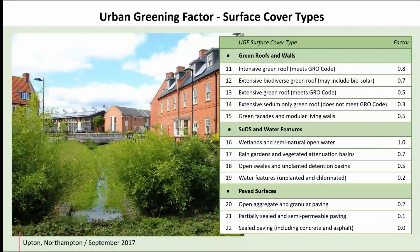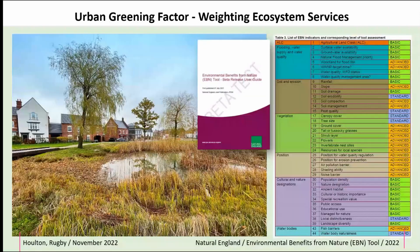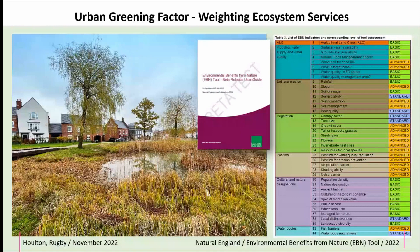Natural England has been developing the Environmental Benefits from Nature tool, which looks at surface cover types and habitat types in much more detail, quantifying their ecological benefit and ecosystem service benefit. We've used that tool as a means to check and test the weightings proposed for the urban greening factor. Each of those 22 surface cover types is explained in the guidance in terms of technical specification and how you measure each type, referencing British standards and other industry-recognised guidance.